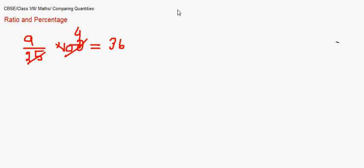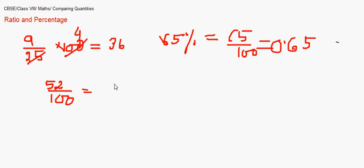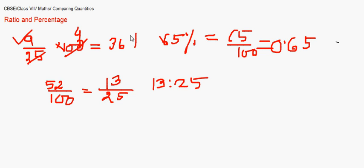That is how you convert a fraction into percentage. Now, when converting a percent into decimal form — suppose you are asked to convert 65% into decimal — write it as 65/100, and dividing gives 0.65. Then, converting a percentage into a ratio: 52% becomes 52/100, and reducing to the lowest terms gives 13:25.